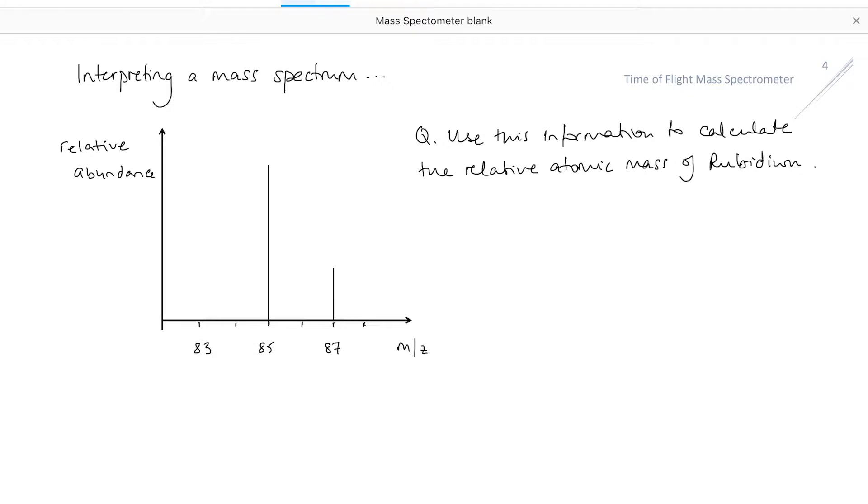I can use a mass spectrum to find the relative atomic mass for an element because I have all the information that I need.